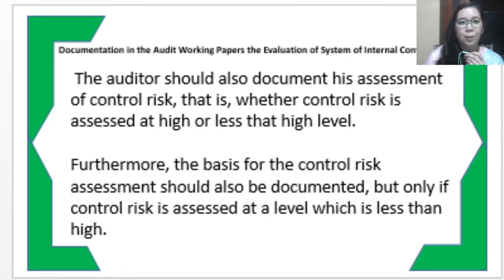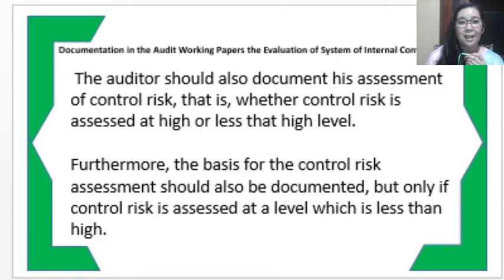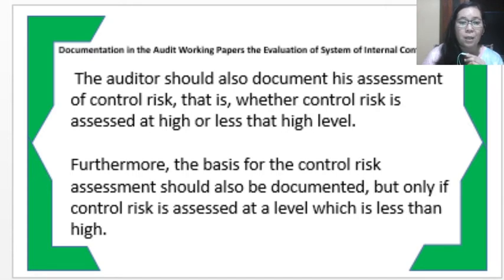The auditor should also document his assessment of the control risk, whether it is assessed at high or less than high, along with his evidence as proof for his assessment. Furthermore, the basis for the control risk should also be documented, but only if the control risk is assessed at a level which is less than high. If the auditor assessed the control risk to be low, meaning the internal control is effective, he would rely more on the controls.